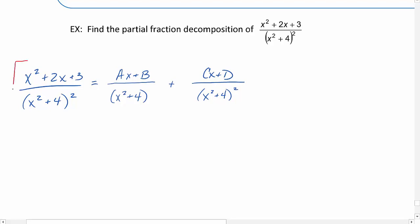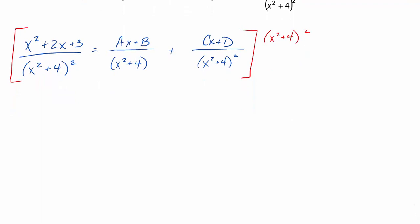Once we get the setup, it just follows the same procedure that we've done for all the other cases. We're going to multiply both sides by our LCD of x squared plus 4 quantity squared. That's going to give us x squared plus 2x plus 3 equal to... Remember to put ax plus b in parentheses as we multiply it by x squared plus 4. Then we'll have just plus cx plus d.